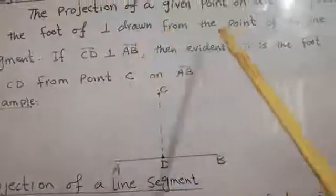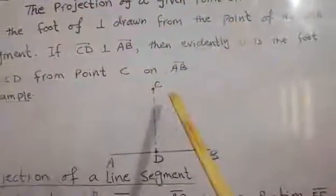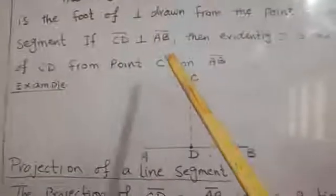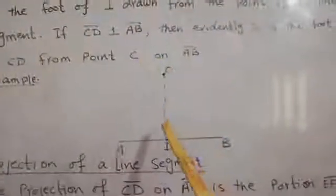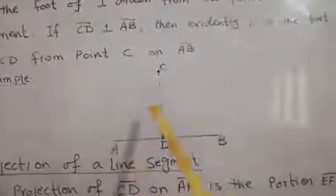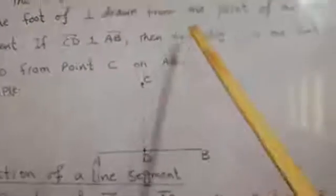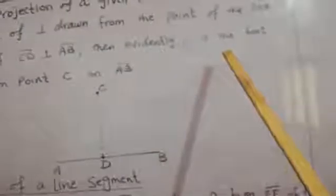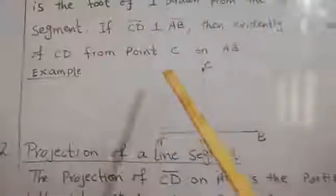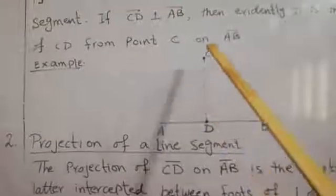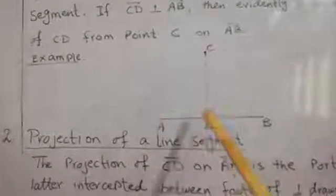If CD is perpendicular to the line segment AB, then evidently D is the foot of CD from point C on AB. So we can say that D is the projection of this point C.